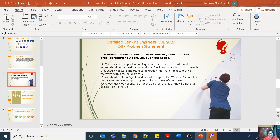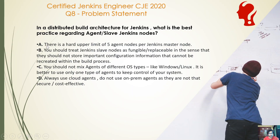Option A is incorrect. There is no hard limit that there needs to be five agent nodes per Jenkins master node. There might be some problems if you have say ten thousand agent nodes for one Jenkins master node, but there is no hard upper limit defined.